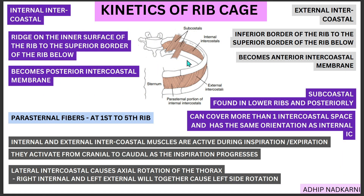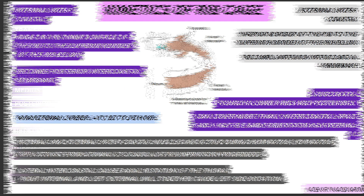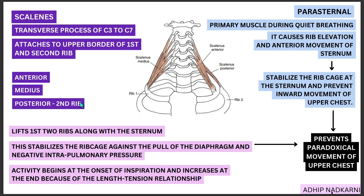Now let's move on to the parasternal and scalene muscles. The scalene muscles originate from the transverse processes of C3 to C7 vertebrae and all attach down to the first and second rib. The scalene can be divided into three parts: anterior, medius, and posterior. The anterior and medius attach to the first rib, whereas the posterior attaches to the second rib. When all these muscles contract together, they create elevation of the first two ribs along with elevation of the sternum. Scalene activity begins at the onset of inspiration.